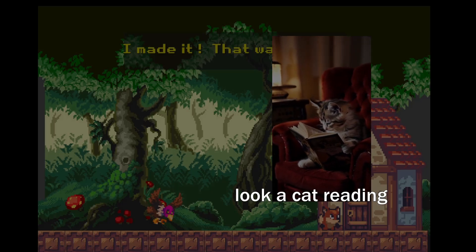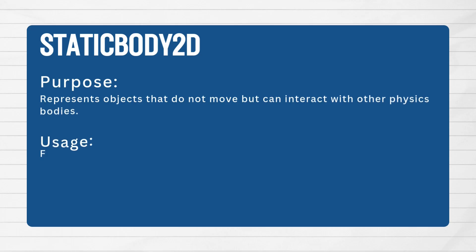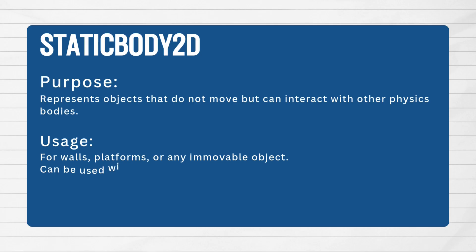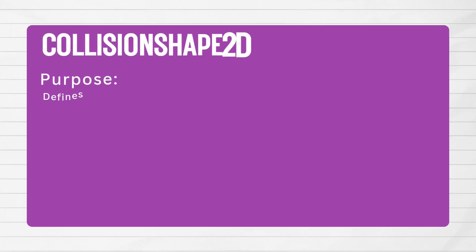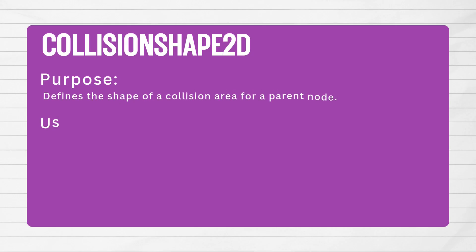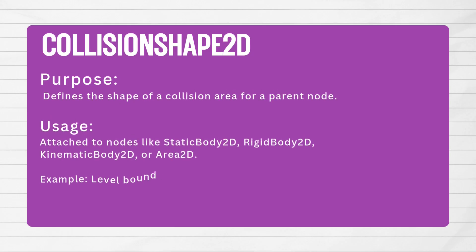One of the first nodes we'll be looking at is the StaticBody2D node. The StaticBody2D node represents objects that do not move but can interact with other physics bodies. This can be used for walls, platforms, or any other immovable object. The StaticBody2D node will not work very well without a CollisionShape2D node, whose purpose is to define the shape of a collision area for a parent node.